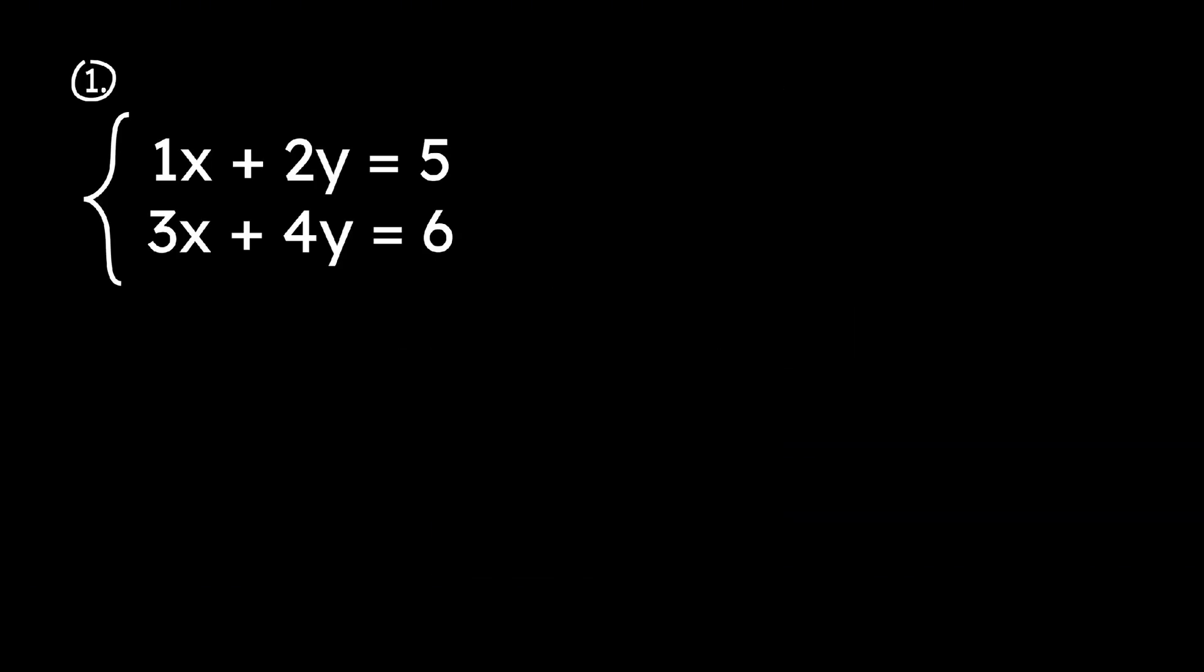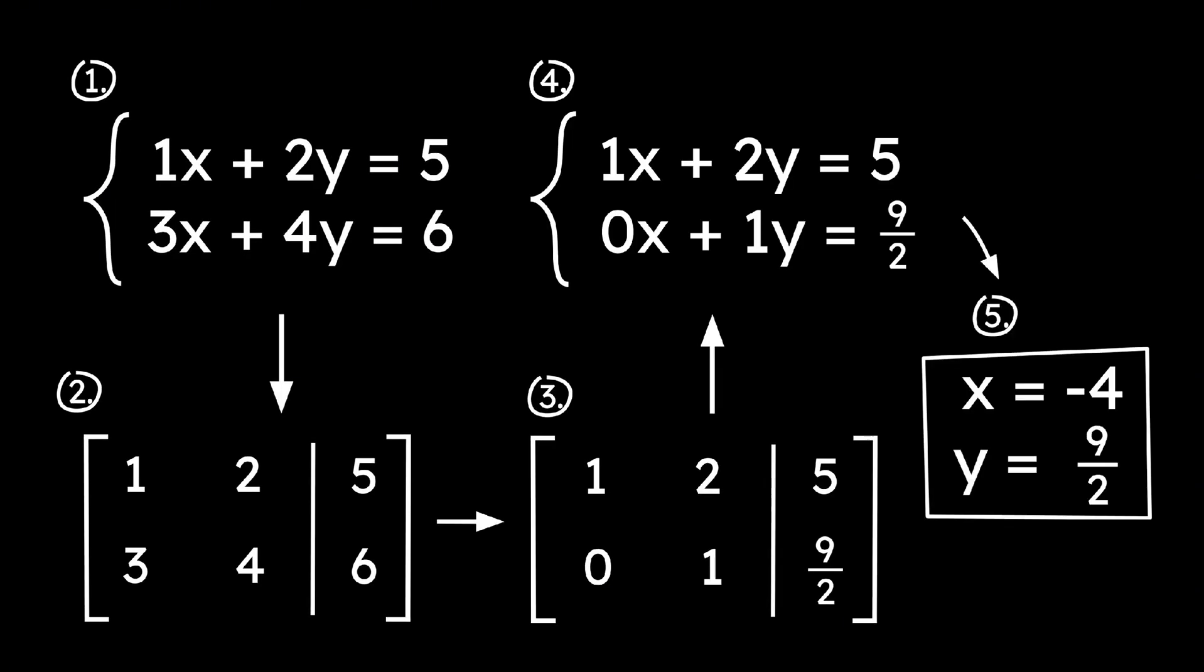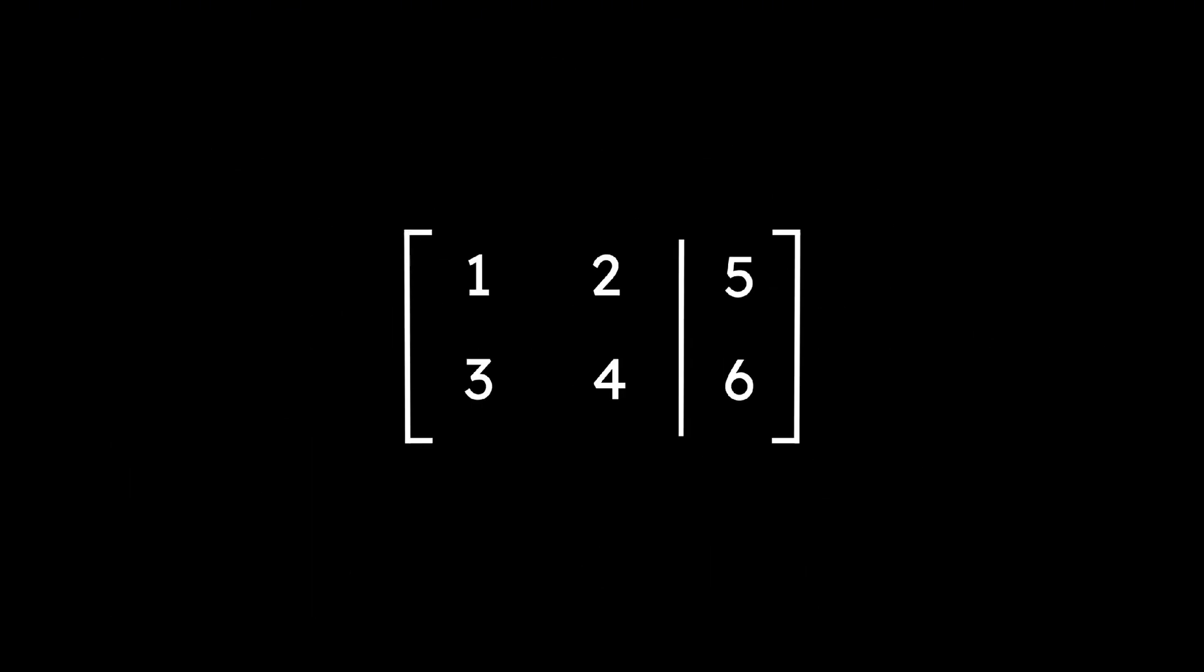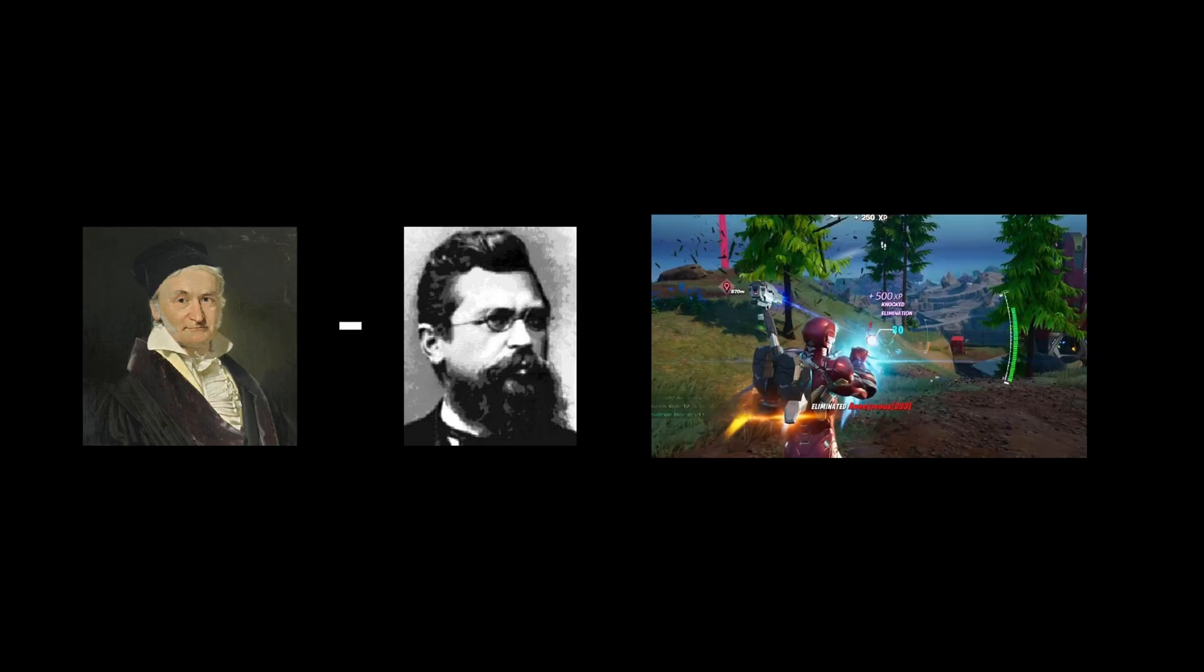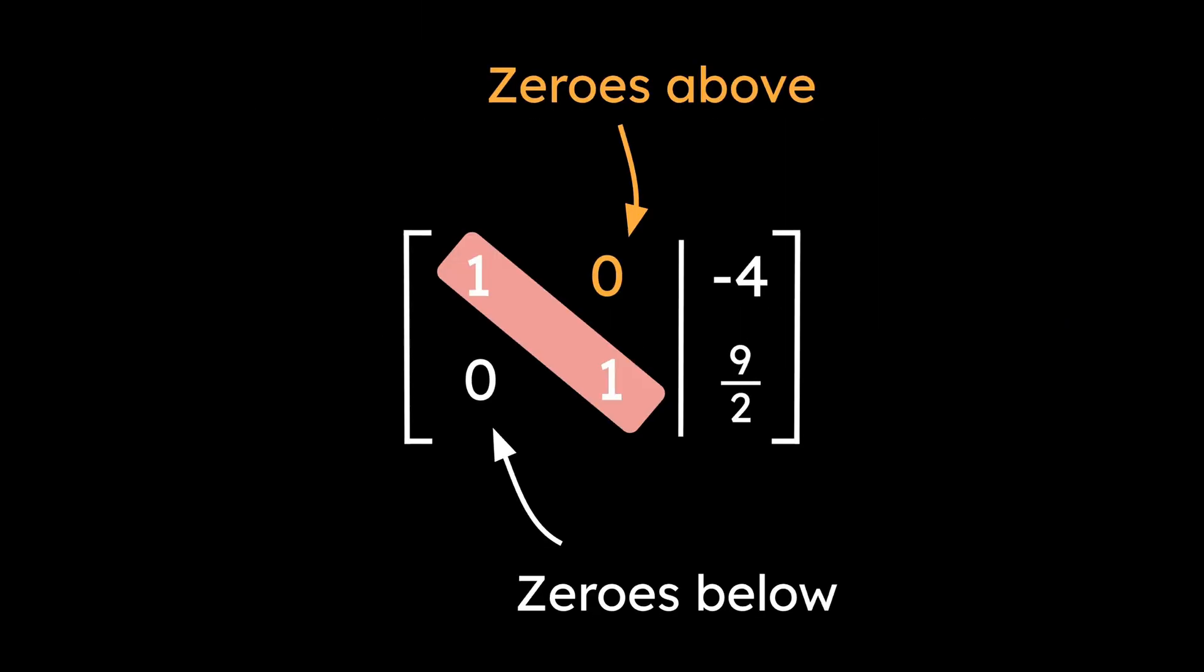Okay, quick recap. We went from this system, converted it into augmented matrix form, then reduced it using row operations, converted it back, and then solved. Another method for solving augmented matrices is Gauss-Jordan elimination. It's similar to Gaussian elimination, but we also get zeros above the main diagonal.